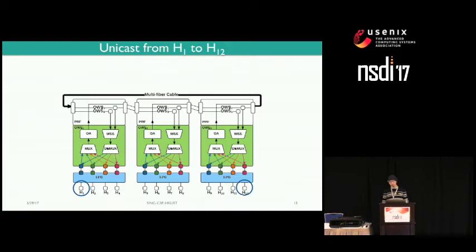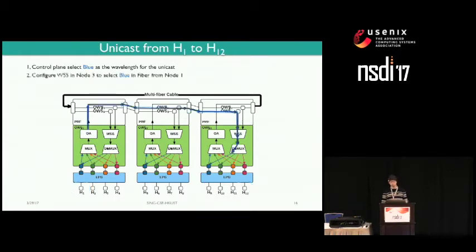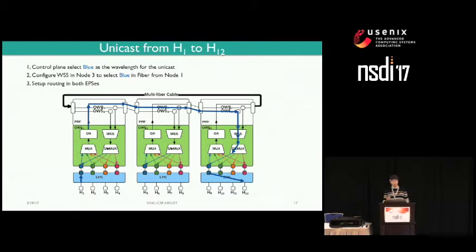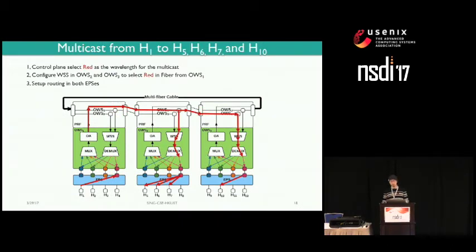To better understand how Megaswitch works, we look at a unicast example where host one tries to communicate with host 12. The control plane first selects the blue wavelengths for this communication, then configures the WSS in node three to select the blue wavelengths on the fiber from node one. In the meantime, we set up routing in both packet switches — steps two and three can be done in parallel — establishing the unicast from host one to host 12. Multicast on Megaswitch is very natural because every signal is broadcast to every node. Each receiving node can just select the red wavelengths on the fiber from node one, establishing a multicast from host one to hosts 5, 6, 7, and 10.